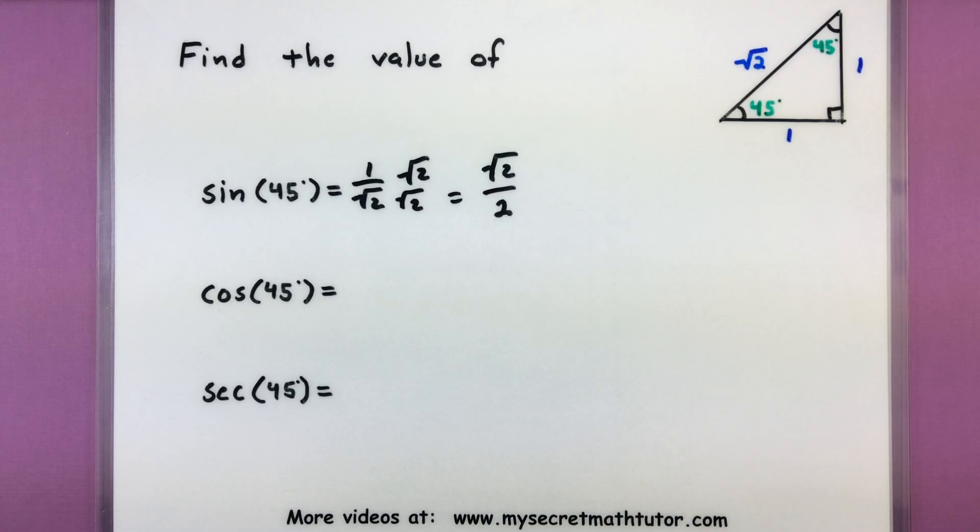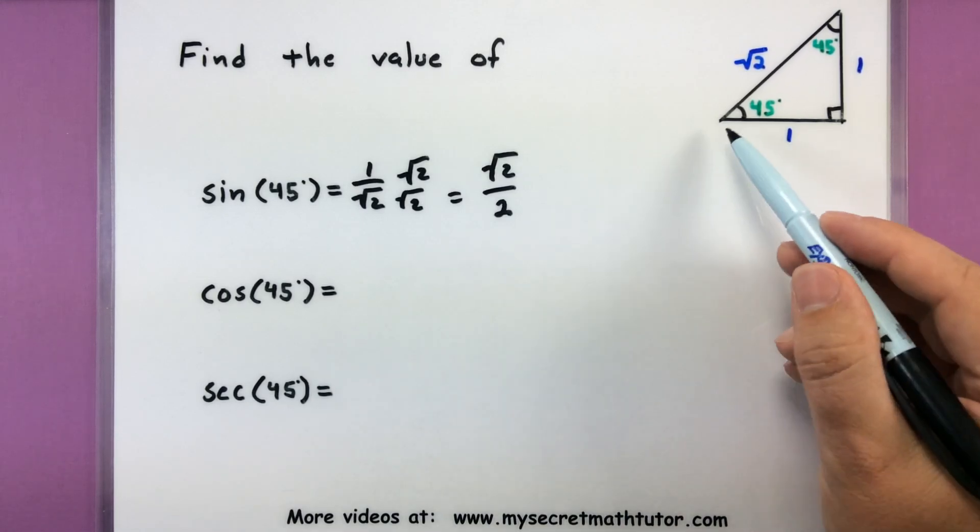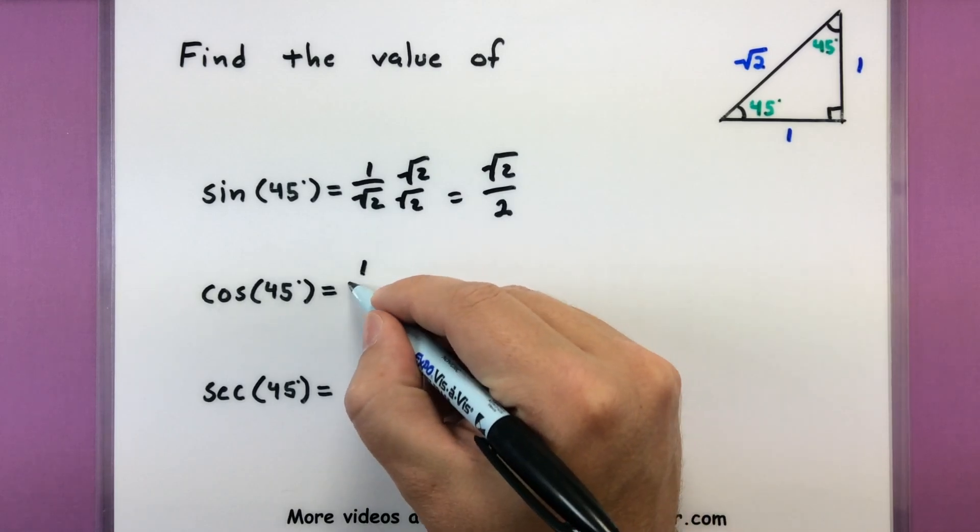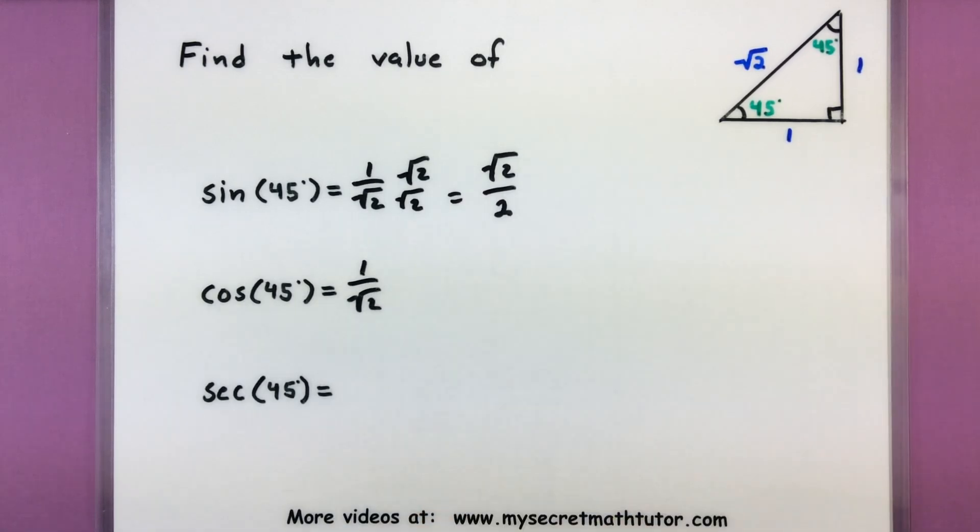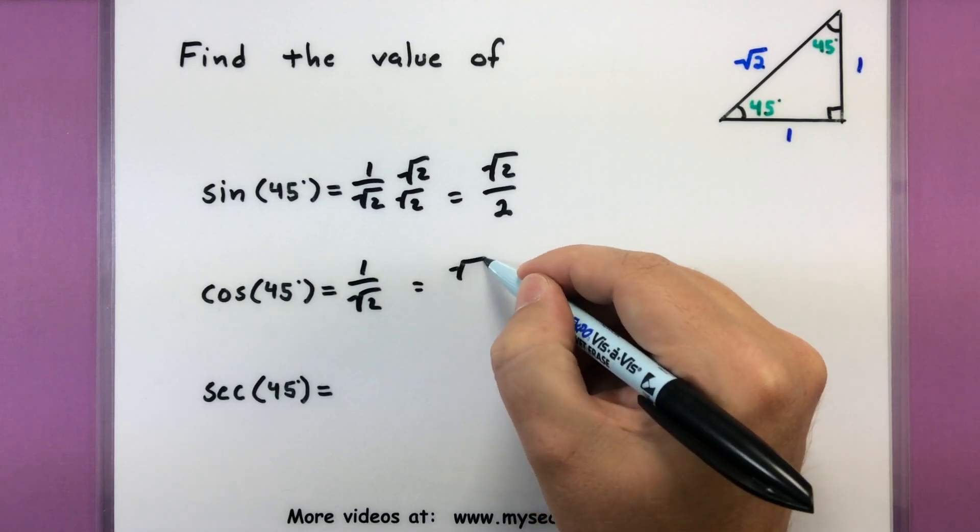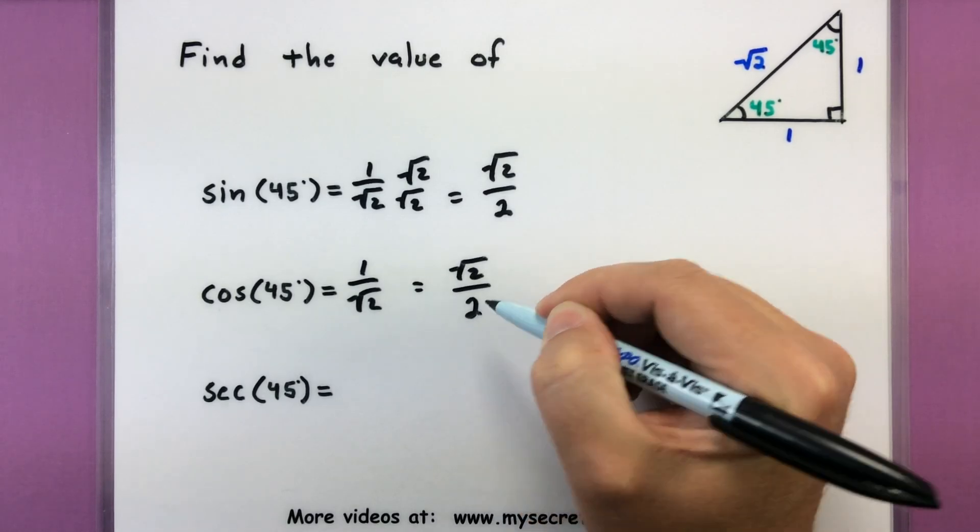All right, moving on. Cosine. Cosine is my adjacent over hypotenuse. So that's 1 over the square root of 2. And like before, we can go ahead and rationalize that denominator, get something like the square root of 2 over 2.